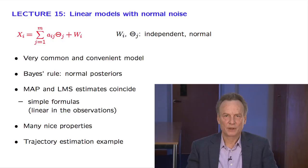In the model that we consider, we start with some basic independent normal random variables. Some of them, the theta j, are unknown, to be estimated. And some of them, the wi, represent noise.